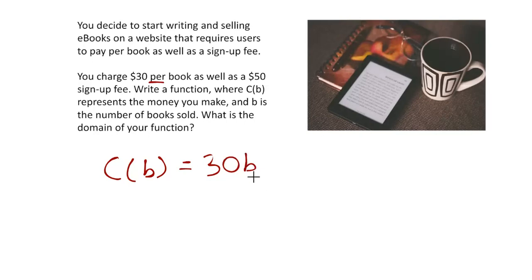For every book, we're getting $30. And then if you notice, this extra $50, that's not dependent on how many books that you sell. You get $50 whether you sell zero books or whether you sell 1,000 books. So that's why this kind of goes over here as plus 50.